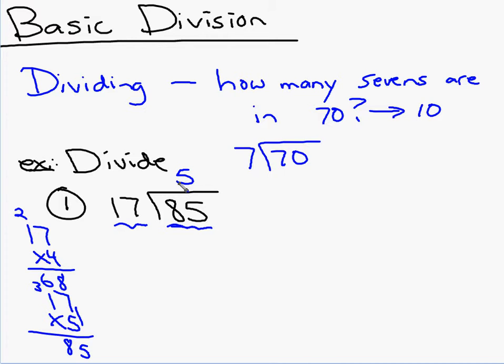And it goes exactly 5 times. So here's what we do, we put a 5 here. And then we think 5 times this 17 makes the number that I put below. And then it becomes a subtraction problem. So I subtract underneath and I get 0. So this problem is done. The answer is 5.